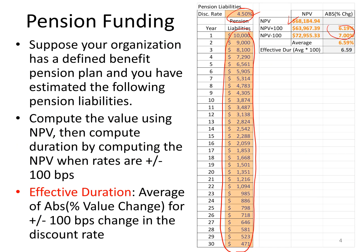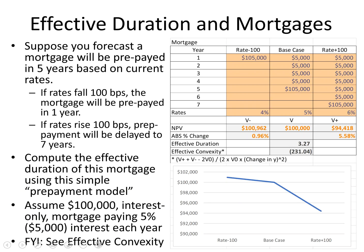We've calculated the duration and value of our pension liabilities. Now I'll talk about effective duration and effective convexity of mortgages before returning to the pension problem. I've created a mortgage expected to be around for five years — a $100,000 interest-only mortgage paying 5% interest per year. As the holder of the mortgage, I'll receive $5,000 each year, and at year five, the owner is expected to move or refinance, mailing back the $100,000 along with the last interest payment.